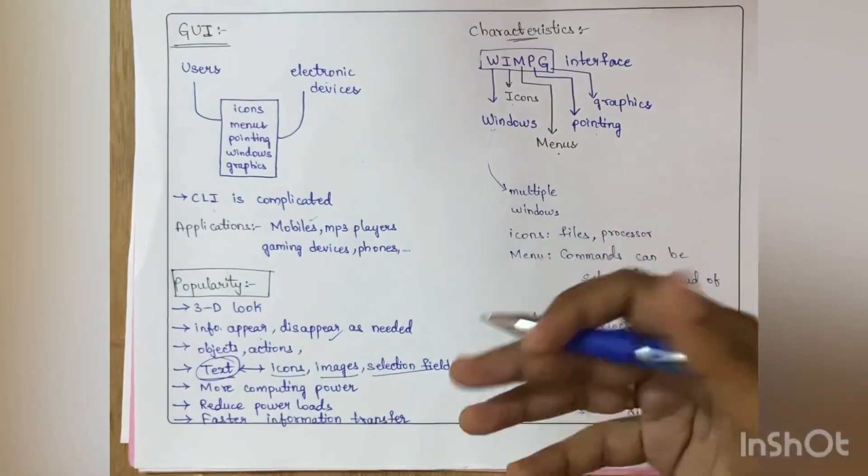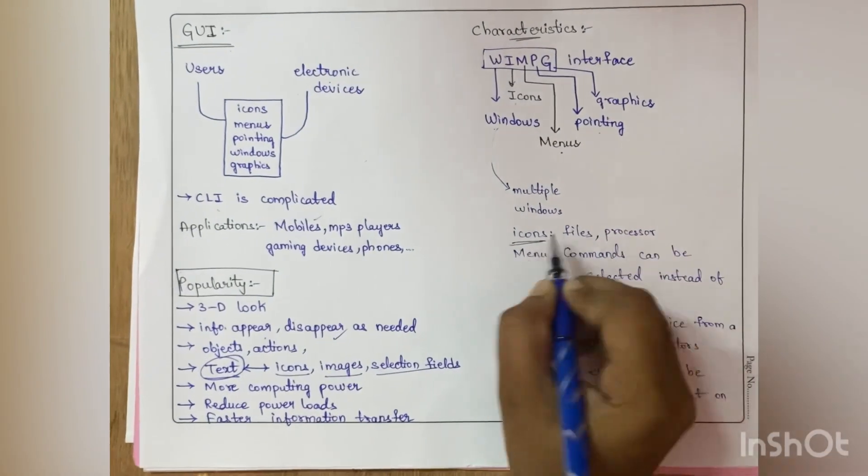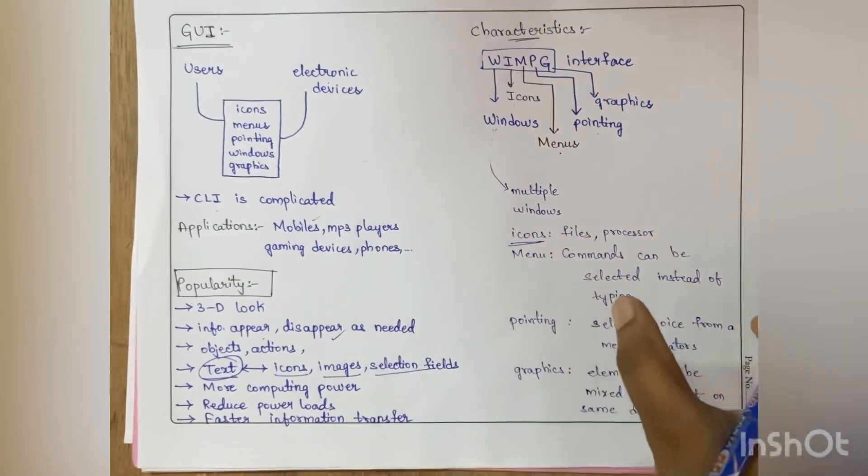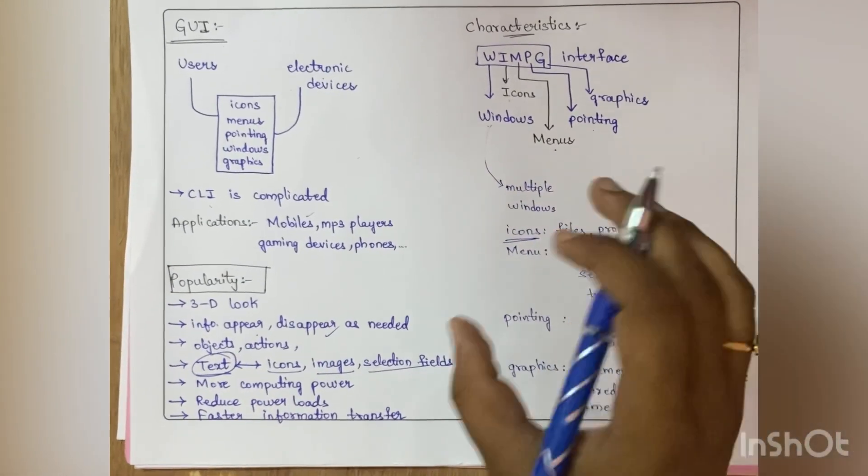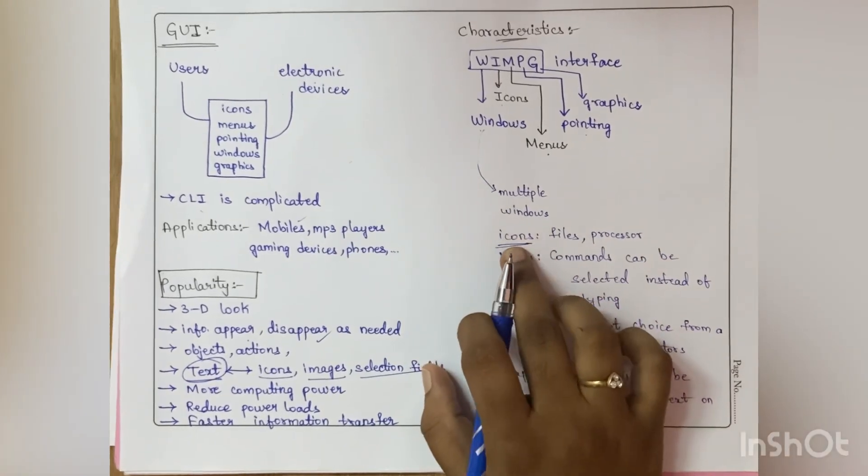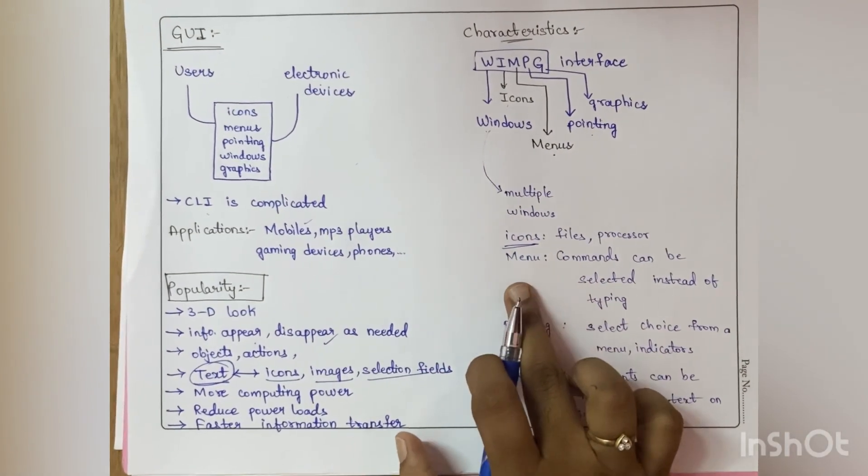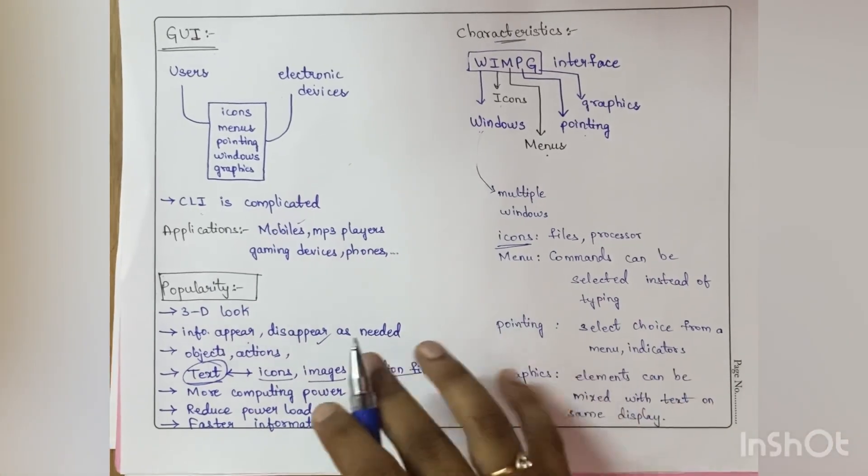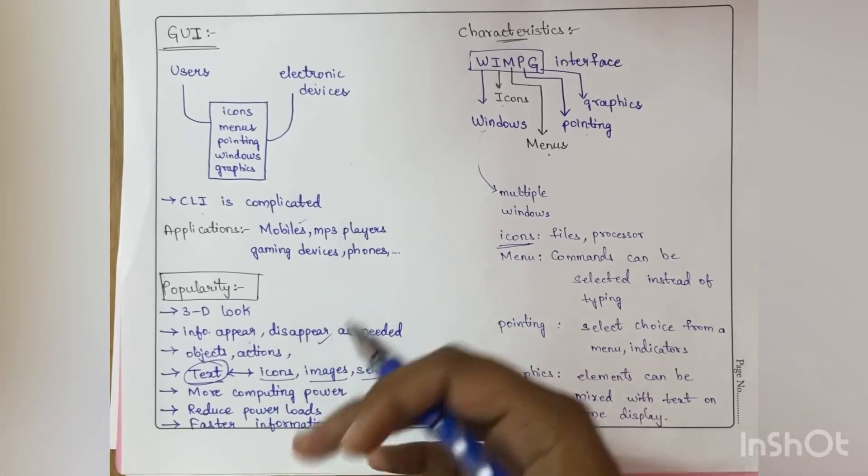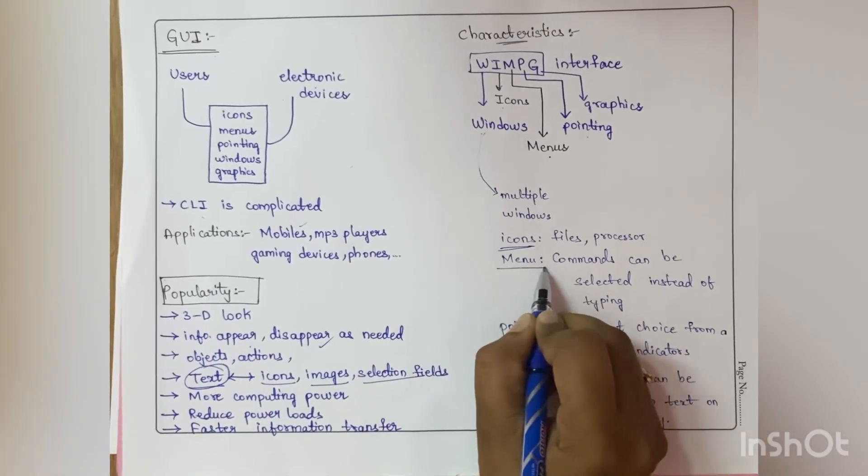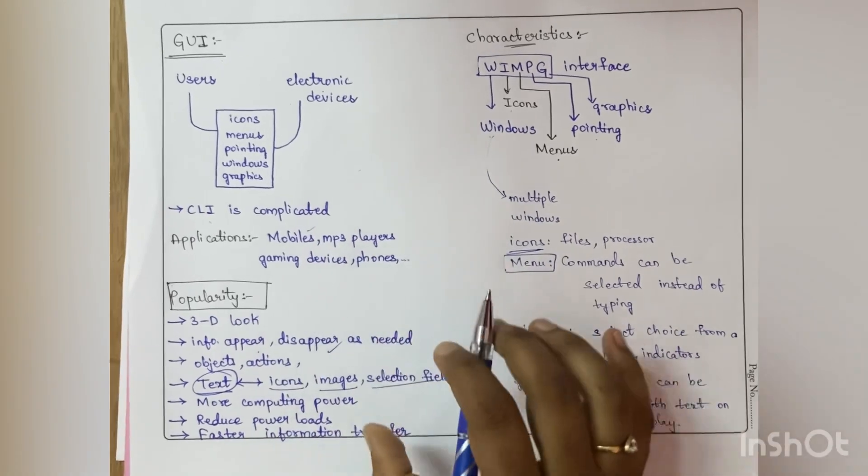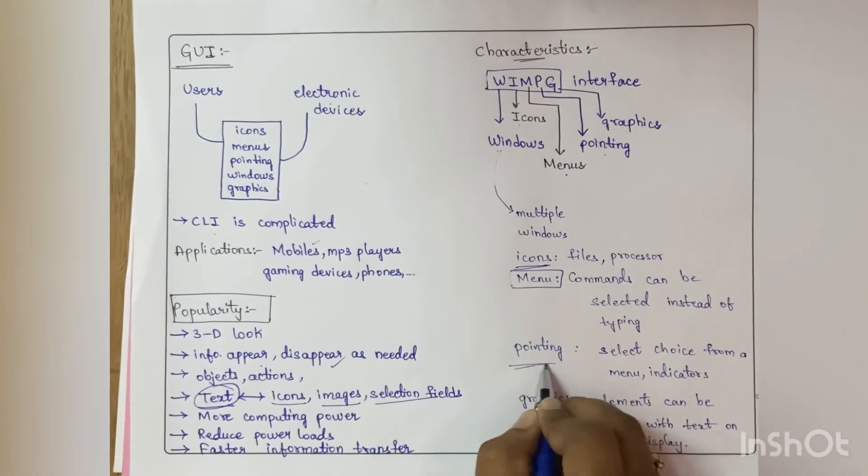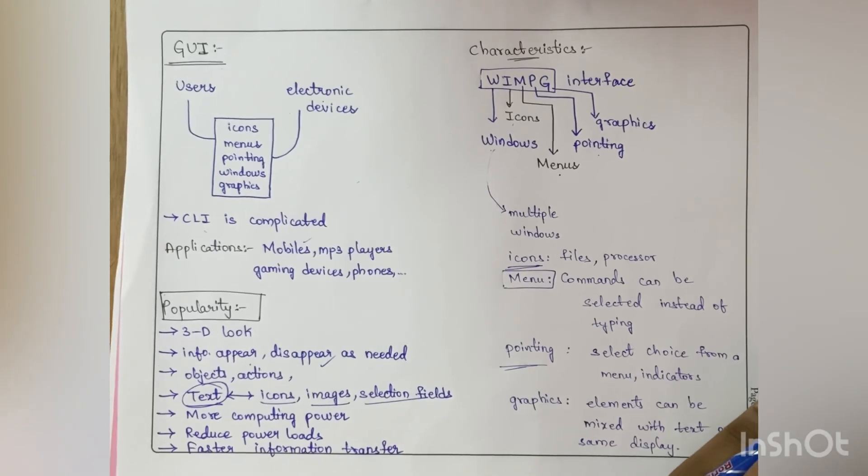Files, processes, folders - all these things come under icons. Coming to menu, previously we used to type all the commands. Now instead of typing the commands we can just select the commands, that's it. Using menu things we can simply select the command. Coming to pointing, pointing is like whatever is necessary for you.